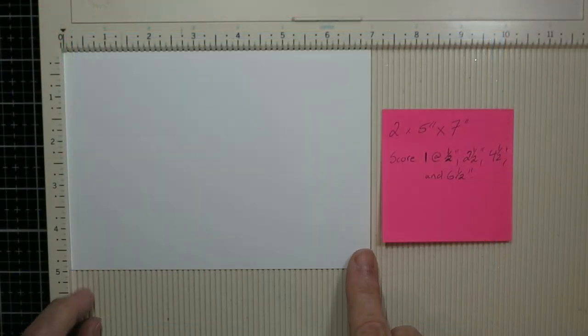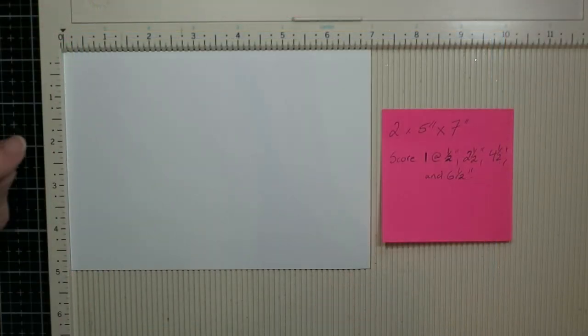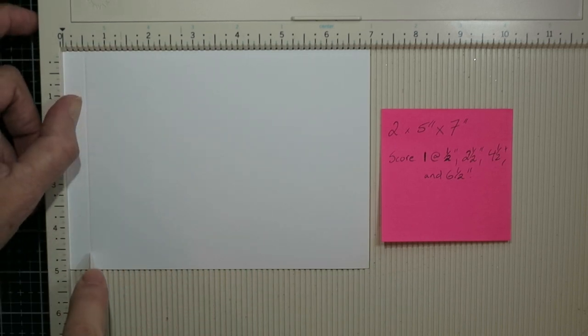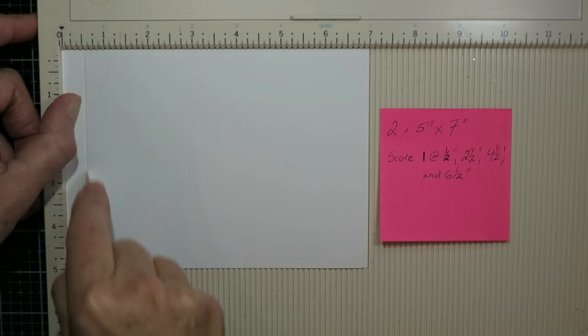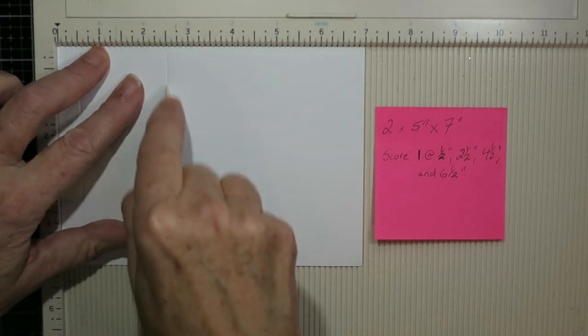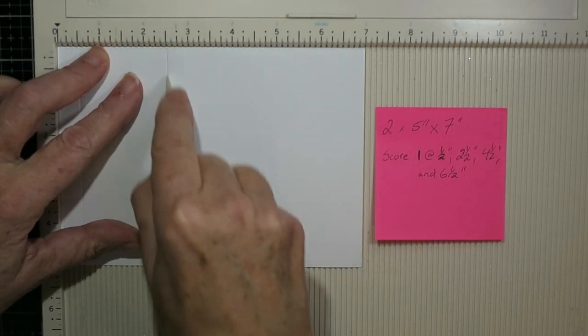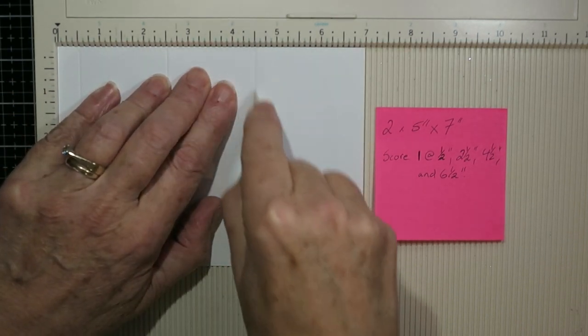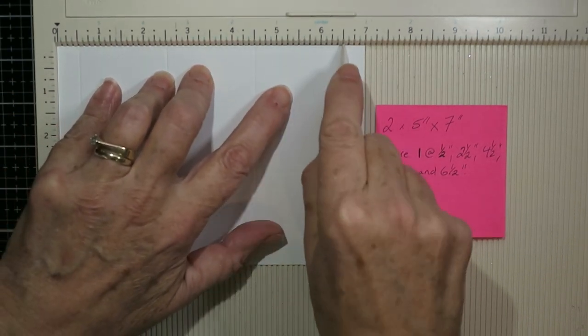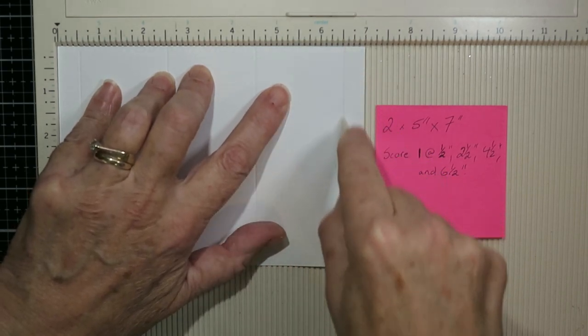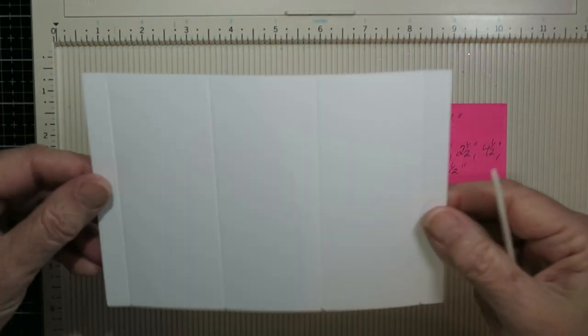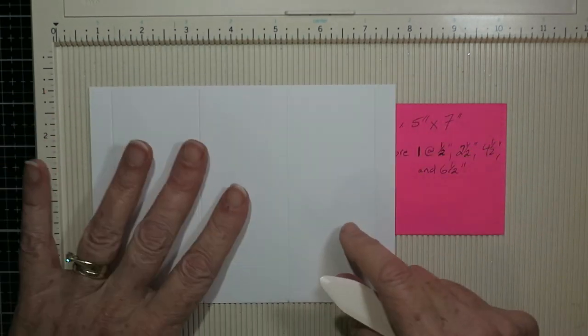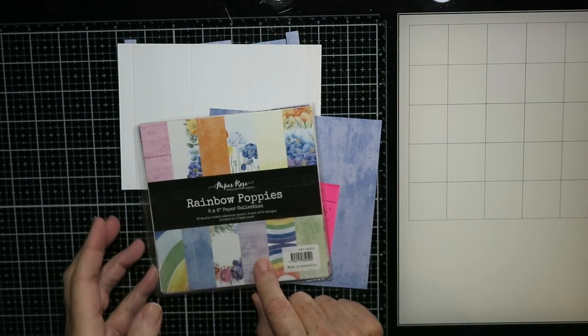So I started this one. It's easy to do. I started with two pieces of cardstock that are 5 inches by 7 inches and I used 110 pound cardstock. I'm creasing one of these pieces at a half an inch, two and a half inches, four and a half inches, and six and a half inches. That will give you the front bay window part. When it gets creased and folded it will make that shape, but you don't want to fold it yet.